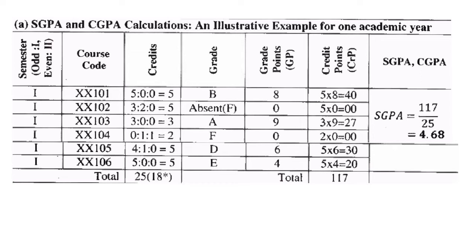While calculating CGPA, we exclude F-grade subjects. In Semester 1, two subjects are failing — one with 5 credits and one with 2 credits, totalling 7 credits. Subtracting 7 from 25 gives 18 'star credits.' This value of 18 is used when calculating CGPA, since failed courses must be excluded. The total credits × grade points remains 117 for SGPA, but 18 is the denominator contribution for CGPA.